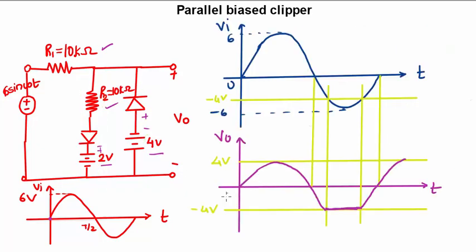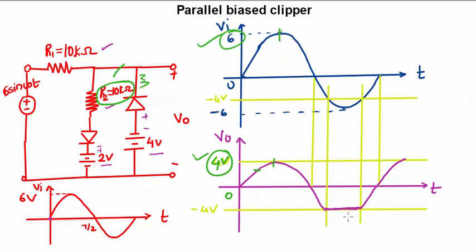To draw the waveform: starting from 0V, the input increases till 2 volts. After that, because of the resistance, the maximum peak value, which was 6V, has decreased to 4 volts. This is the most important concept — because of the resistance, the maximum peak voltage decreases from 6V to 4V. If resistance is added in the positive cycle, the positive peak decreases; if added in the negative half cycle, the negative peak would reduce. In the negative half cycle, since there is no resistance, when the diode is short-circuited, 4 volts appears across the output. Once you reach −4 volts, the diode is shorted and you get a continuous −4V DC at the output. This is how the waveform is drawn.